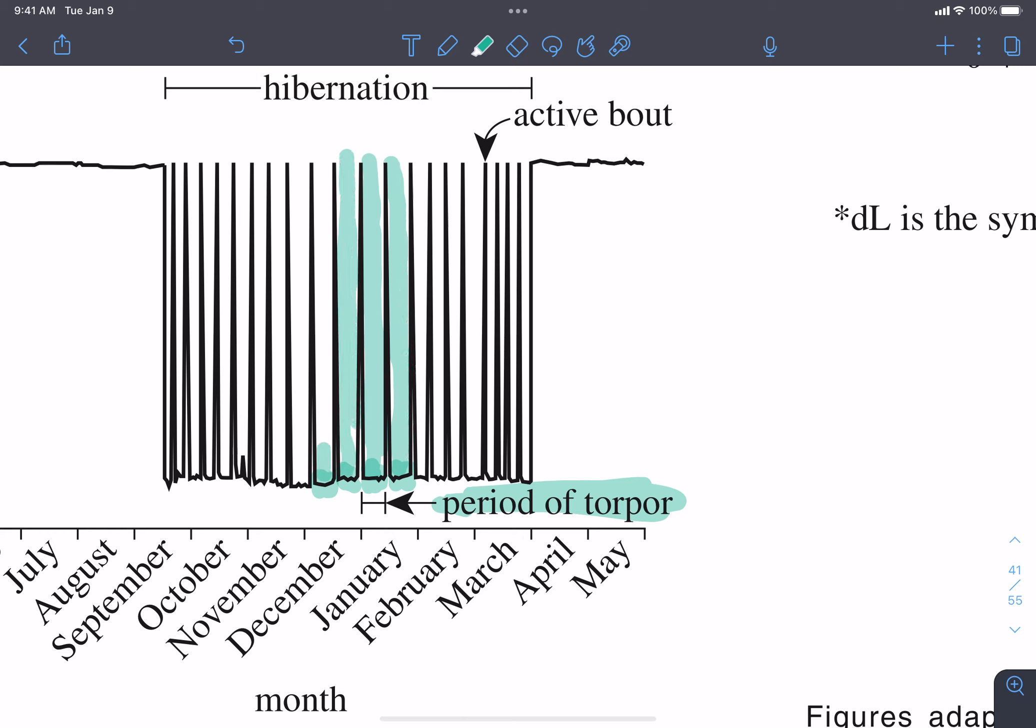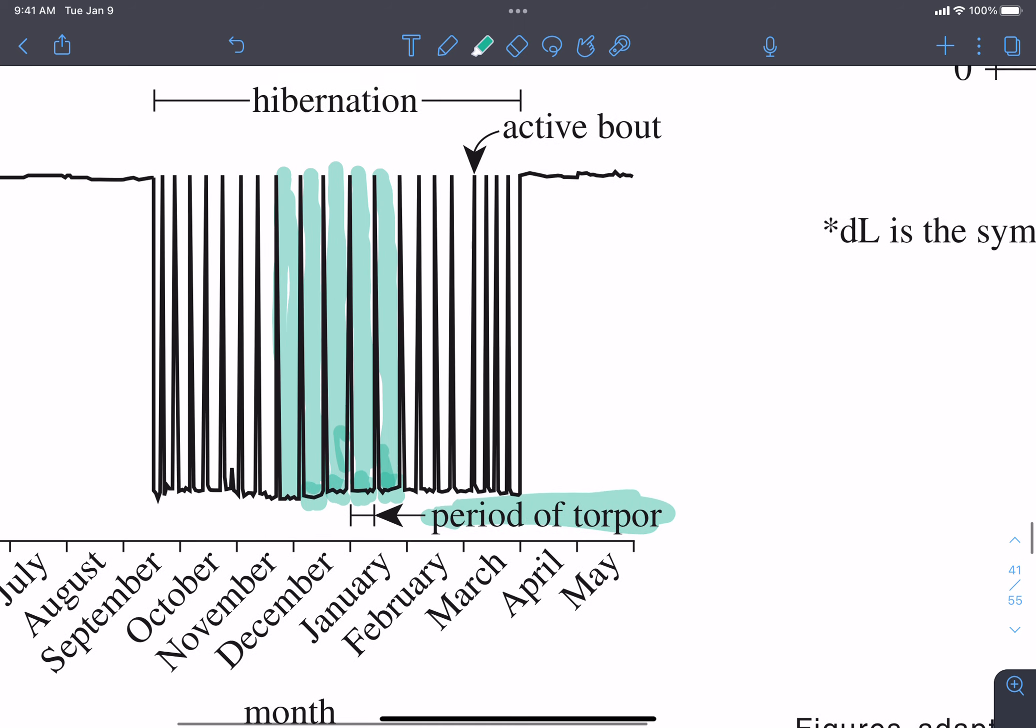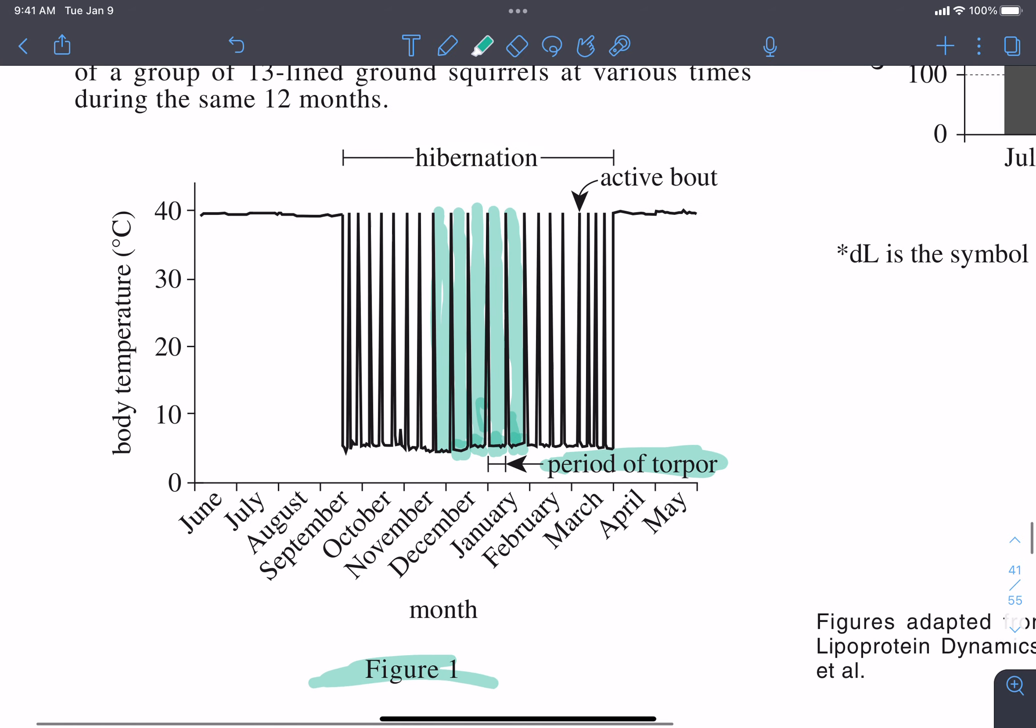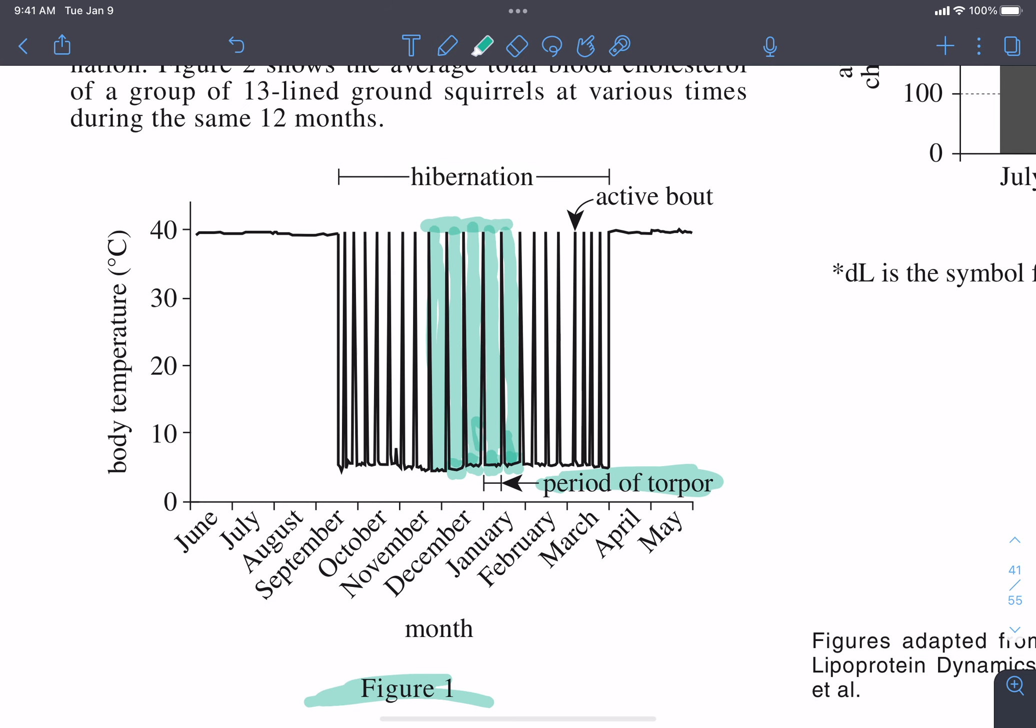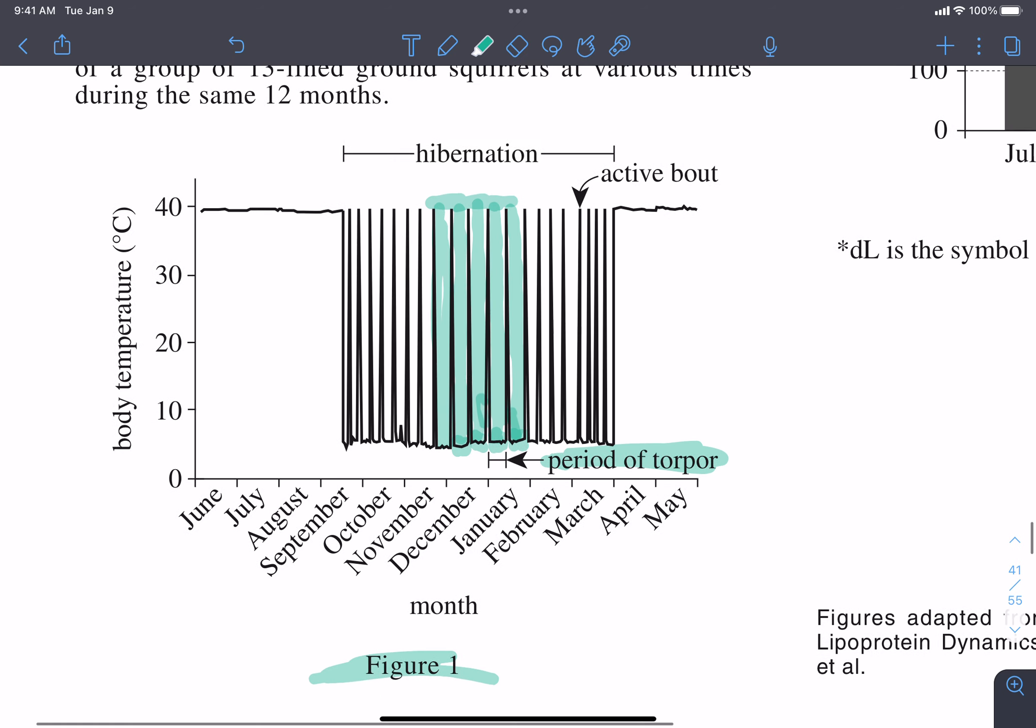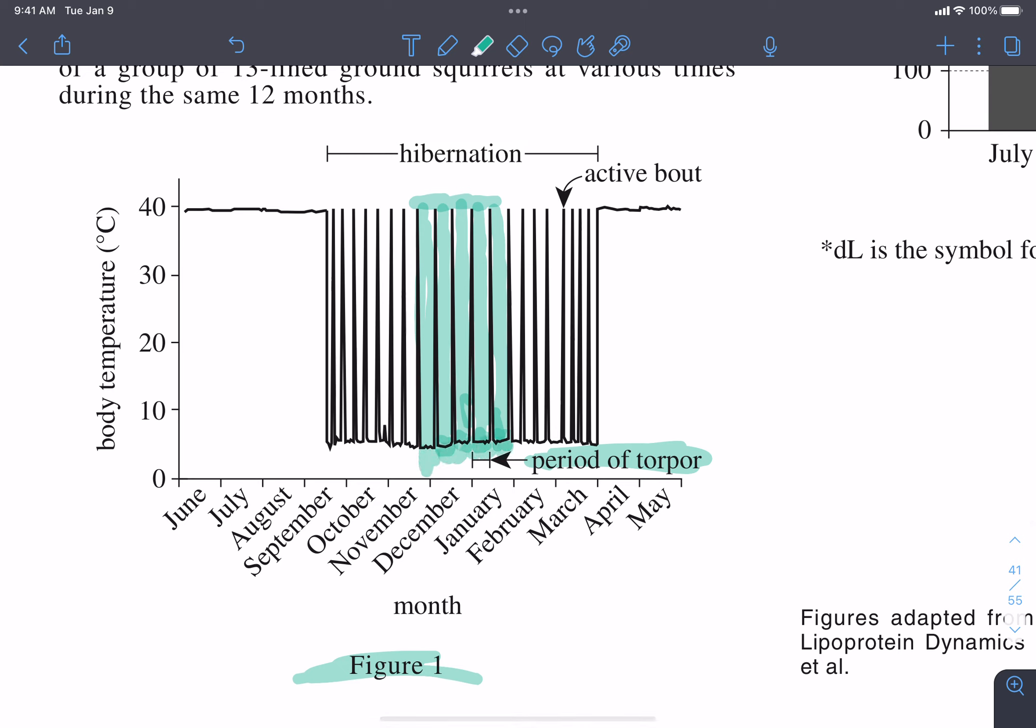And it's asking us in which of the months did the squirrel spend the most time in periods of torpor? So you look through, and it's basically asking you in which month is this area between these spikes going to be largest? For the purpose of time, I will tell you that the largest periods of torpor, again, the area between the spikes, is going to be from the November to February area.